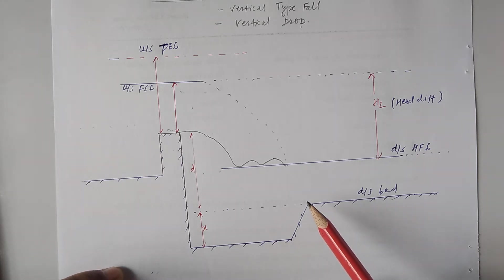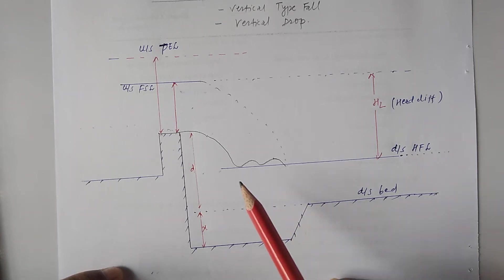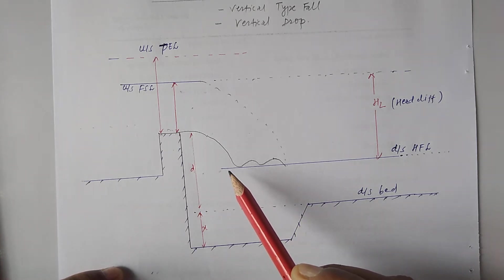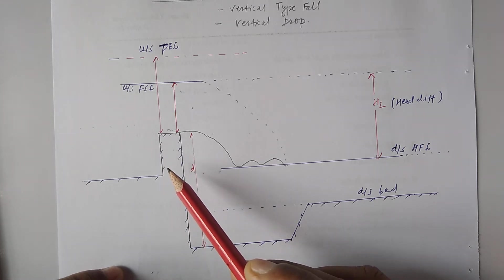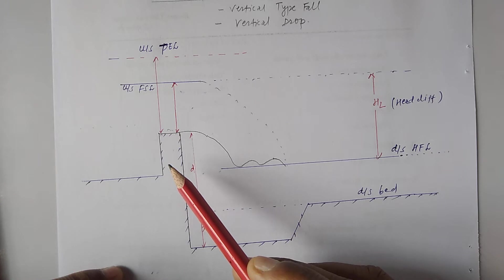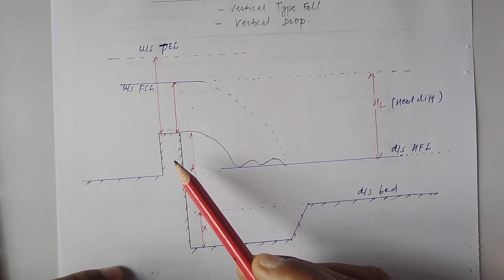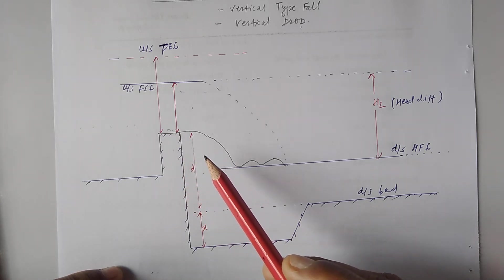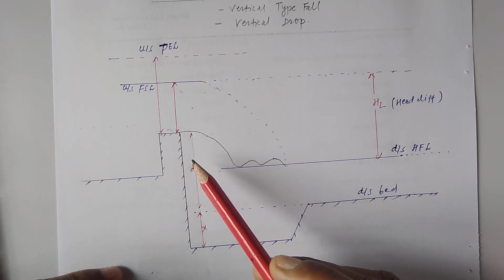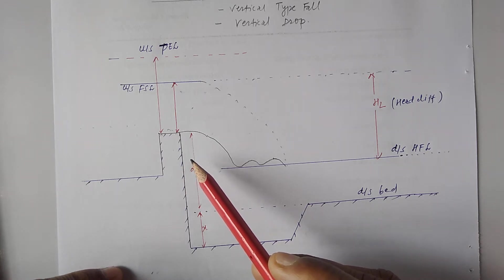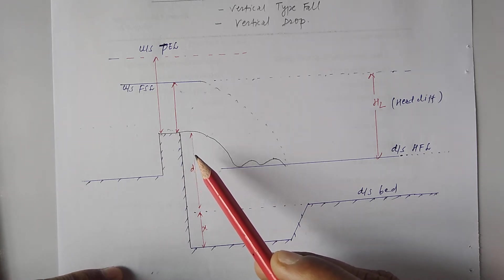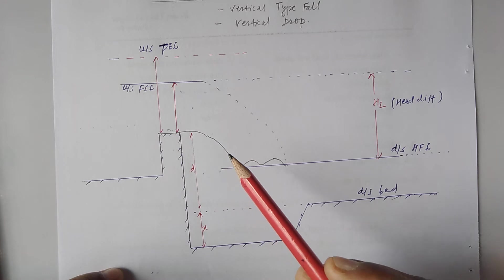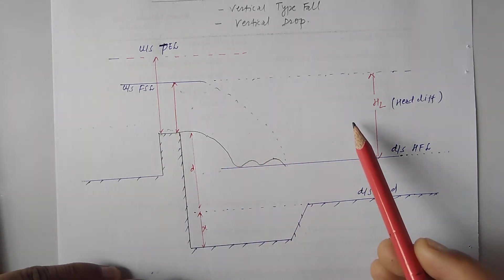Since the top of the channel bed is not stable, in order to retain the drop a masonry structure is constructed. This masonry structure retains the vertical slope, and this is called the Sarda type of fall.